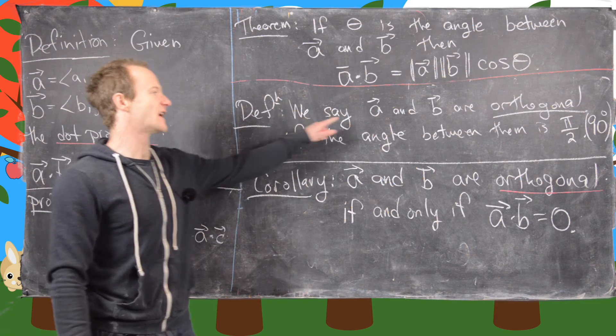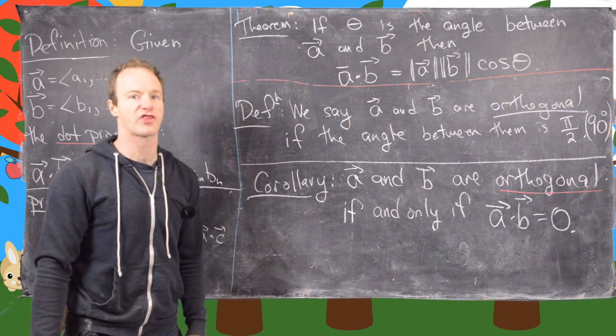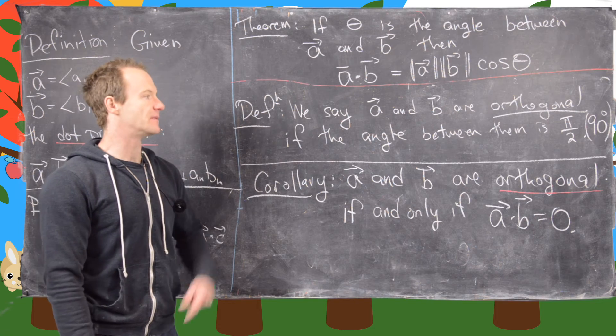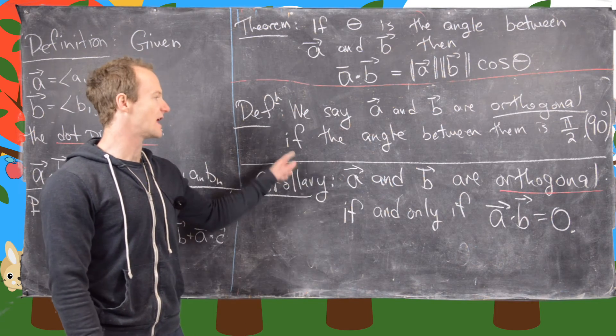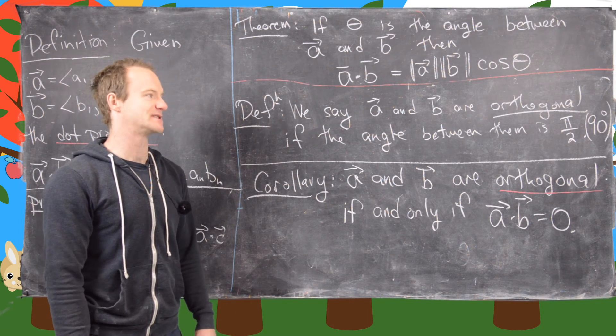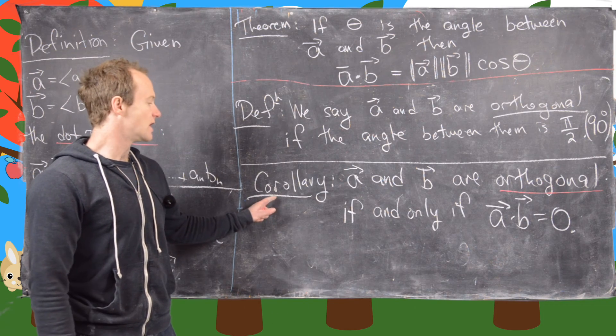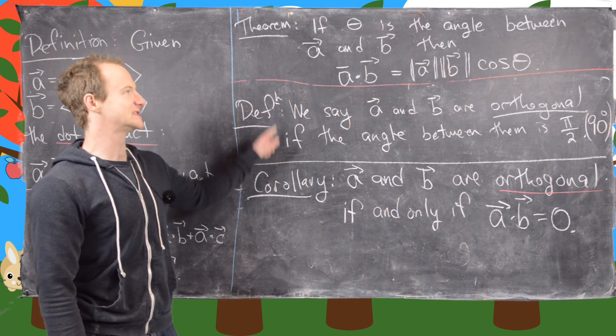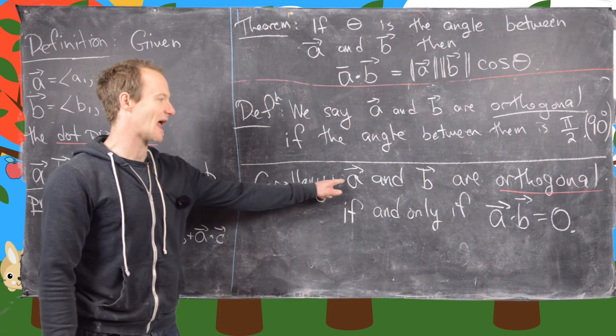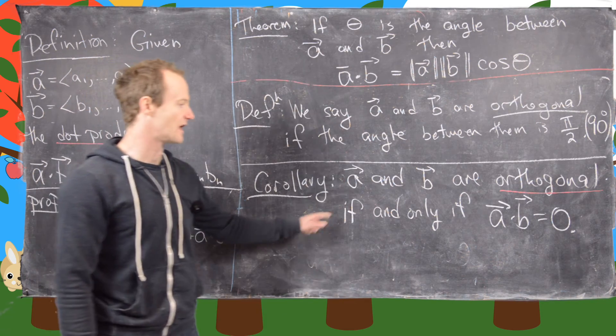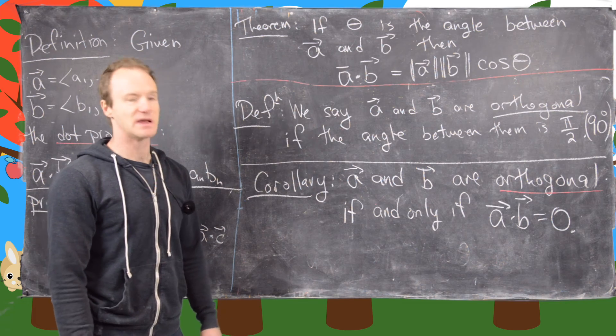So we say vectors A and B are orthogonal. So you want to think perpendicular, but the more general term is orthogonal, if the angle between them is 90 degrees, in other words, pi over 2 radians. So the corollary that we can build off of this definition and this theorem is that A and B are orthogonal if and only if A dot B equals 0.